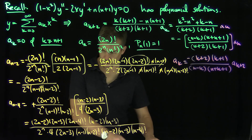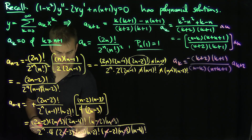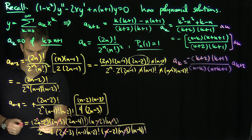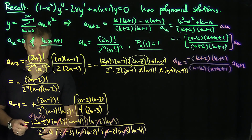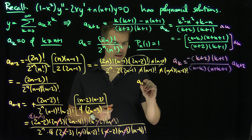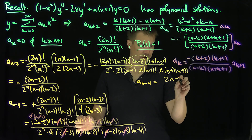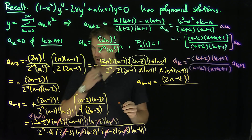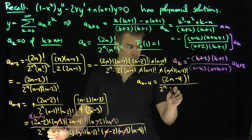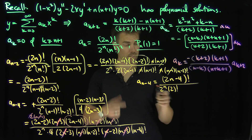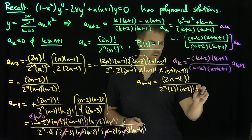We can see by induction what happens: the (2n-3) terms cancel, the (n-2)(n-3) factors cancel, and factoring out 2 from the 4 leaves 2! in the denominator. So a_{n-4} equals (2n-4)! over 2^n · 2! · (n-2)! · (n-4)!. This reveals the pattern that will generalize by induction.